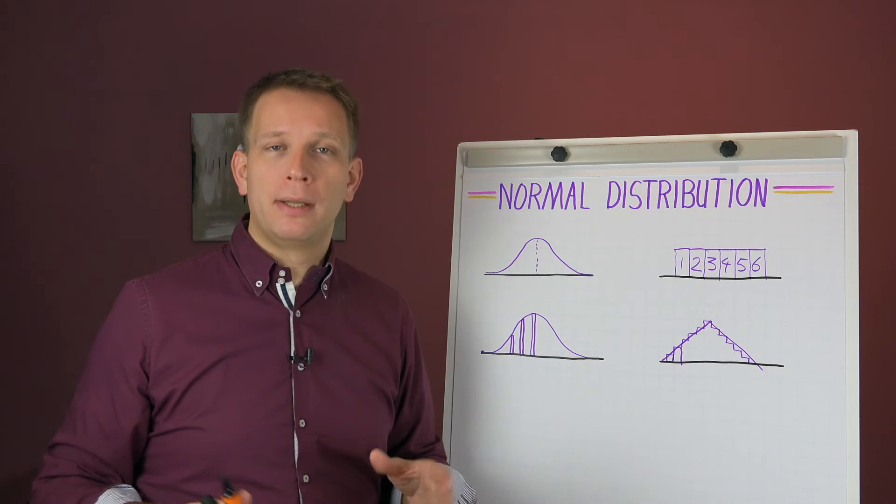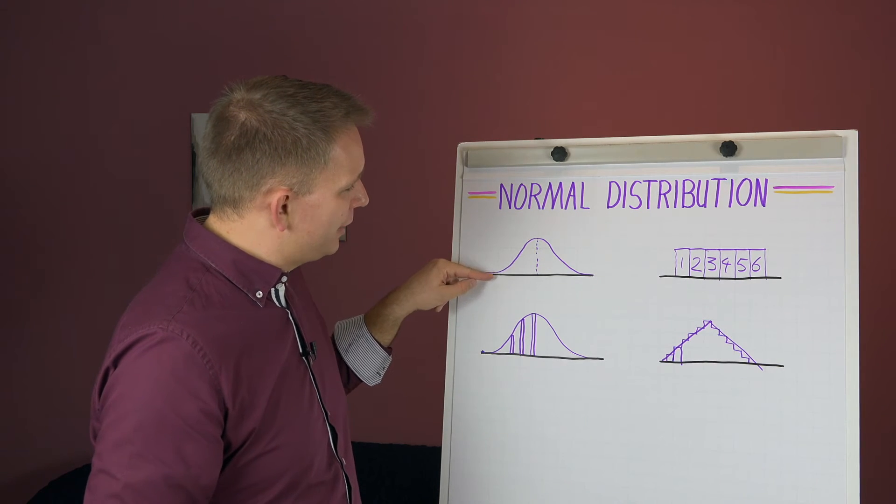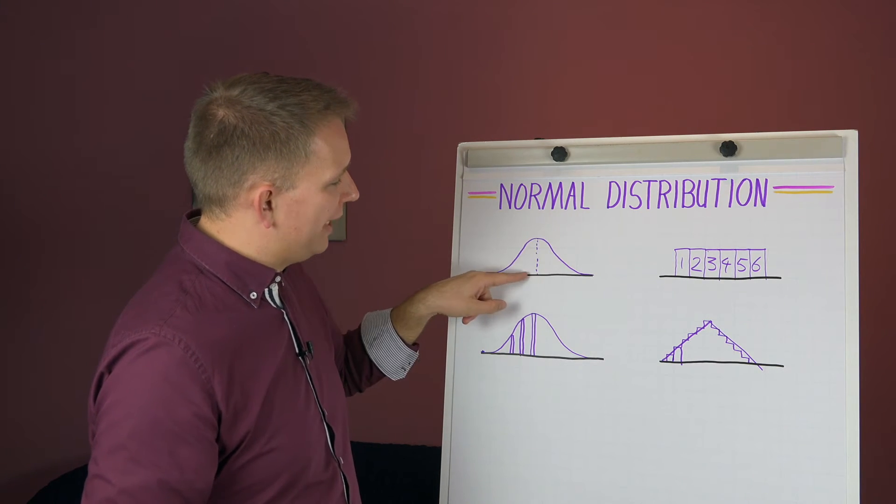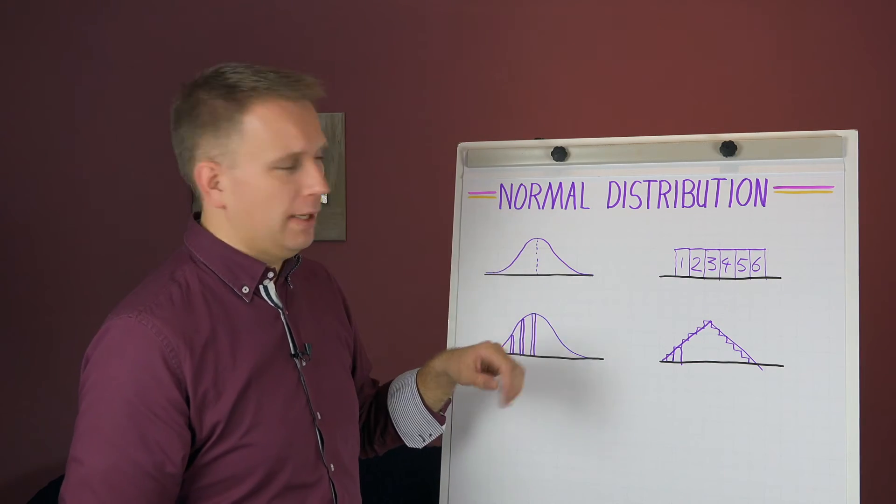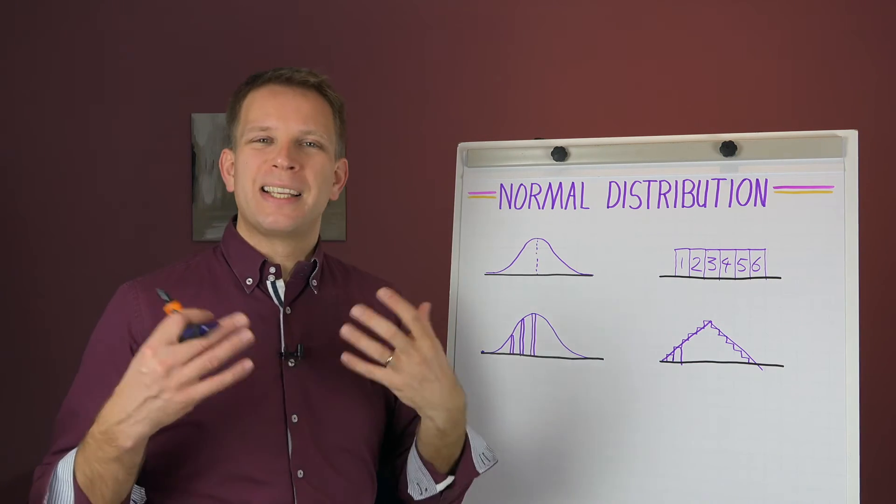We measure it thousands of times and then we get to most of them will center around the mean, but you always get a couple big ones, a couple small ones, something like that.